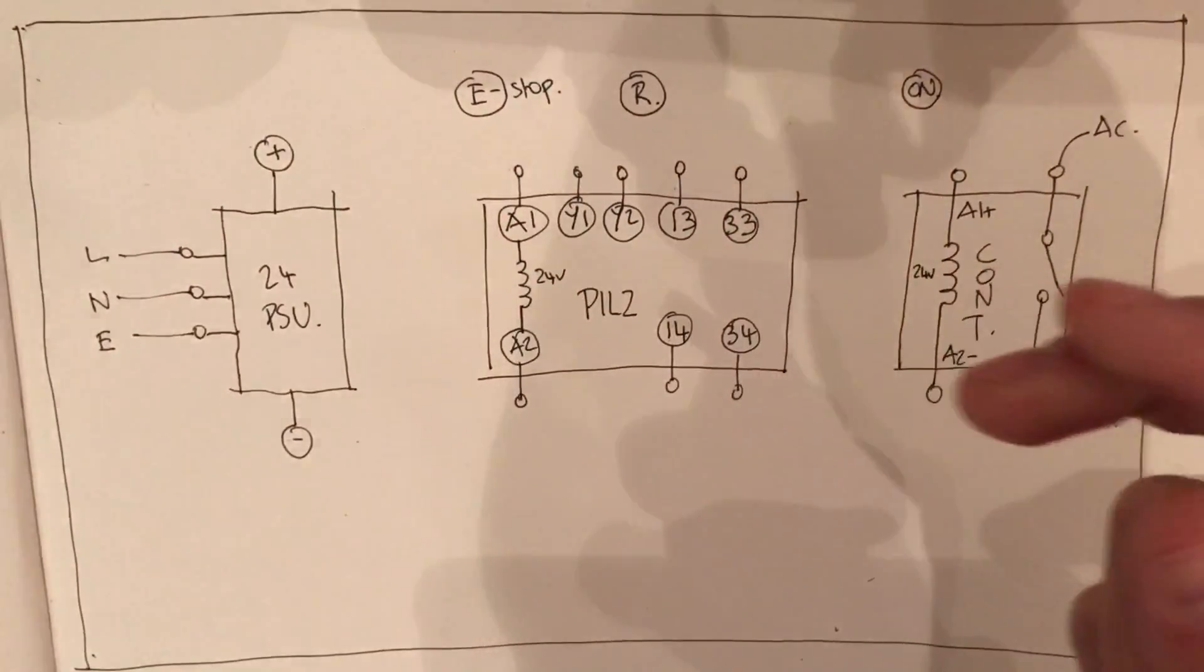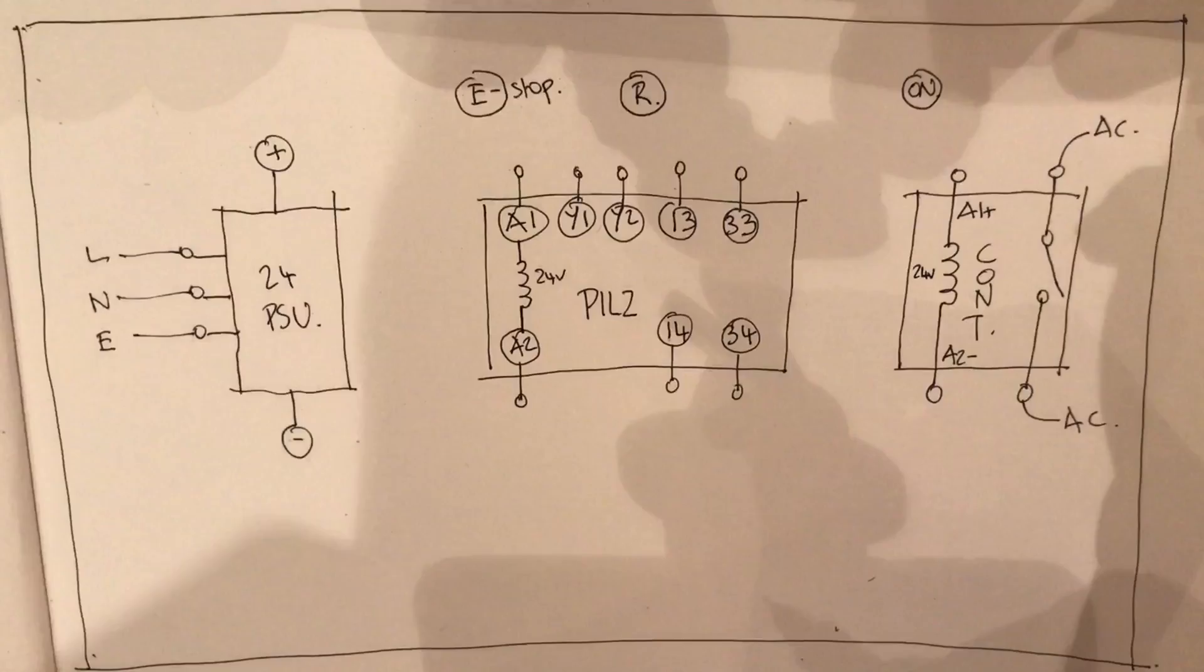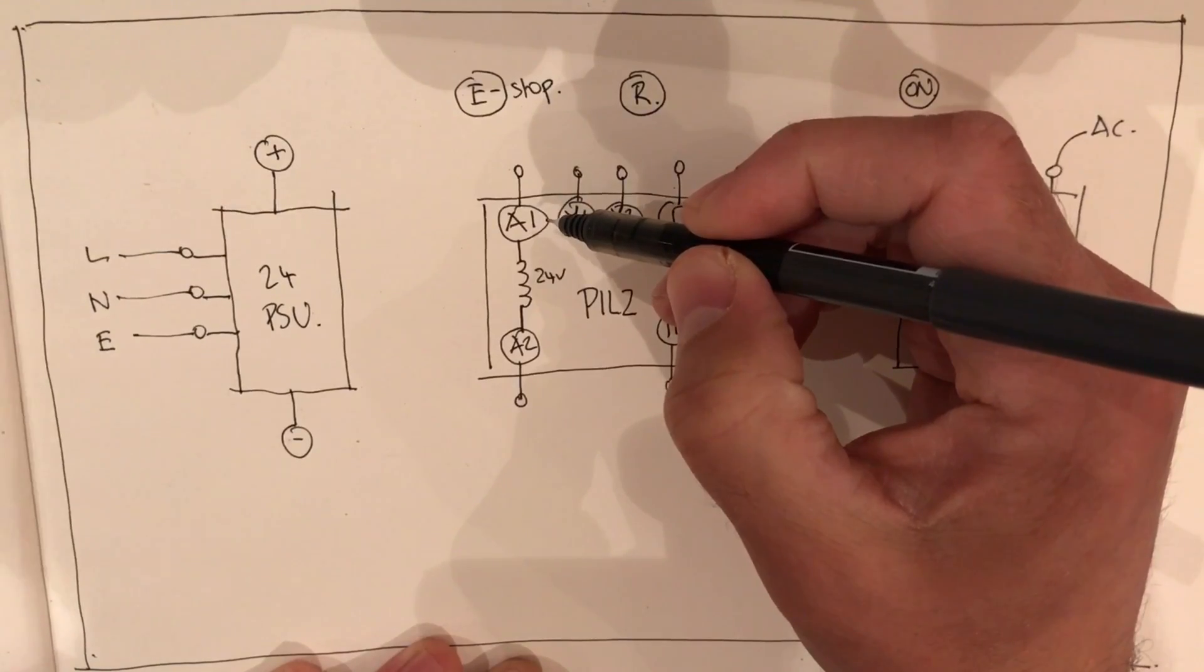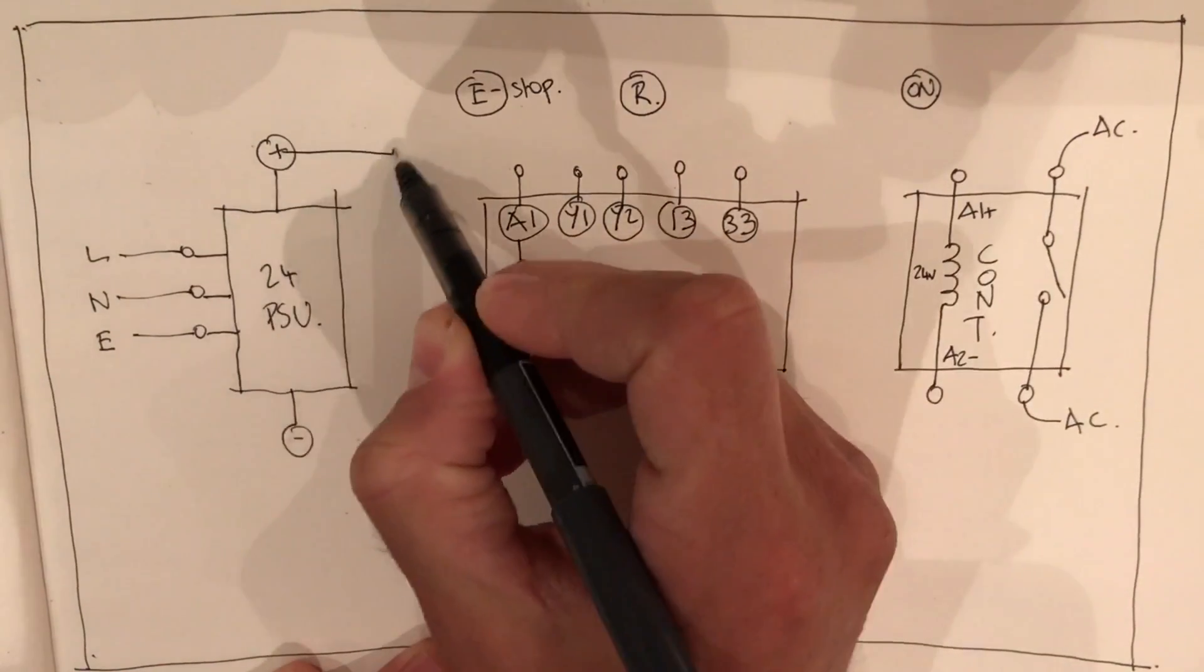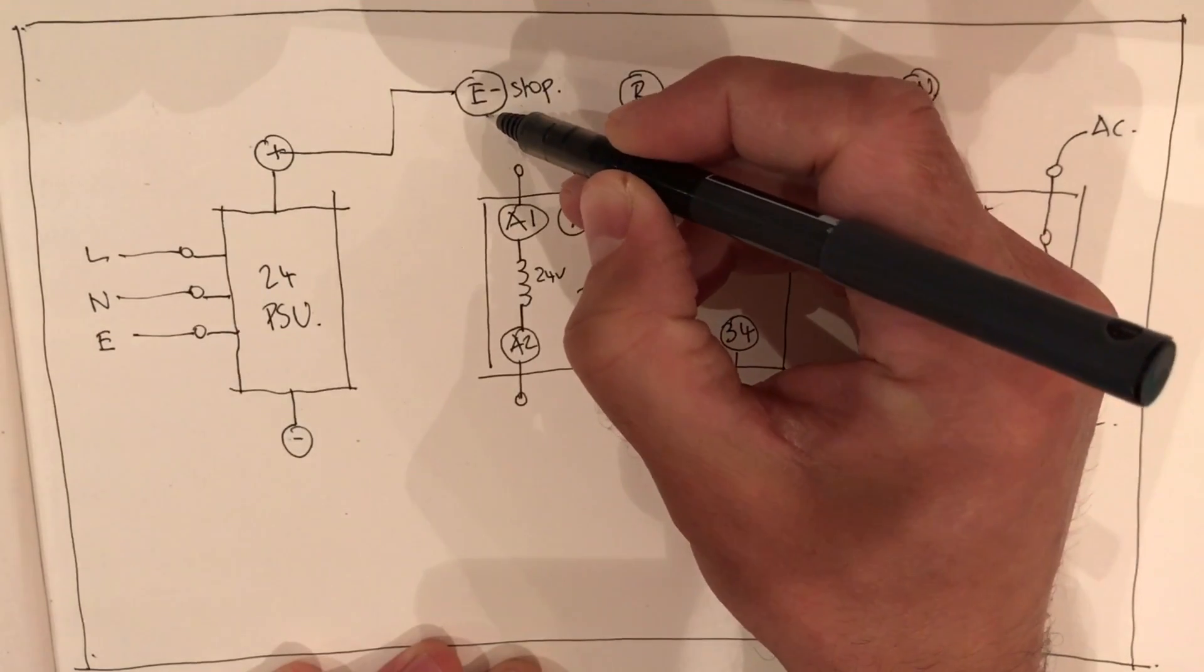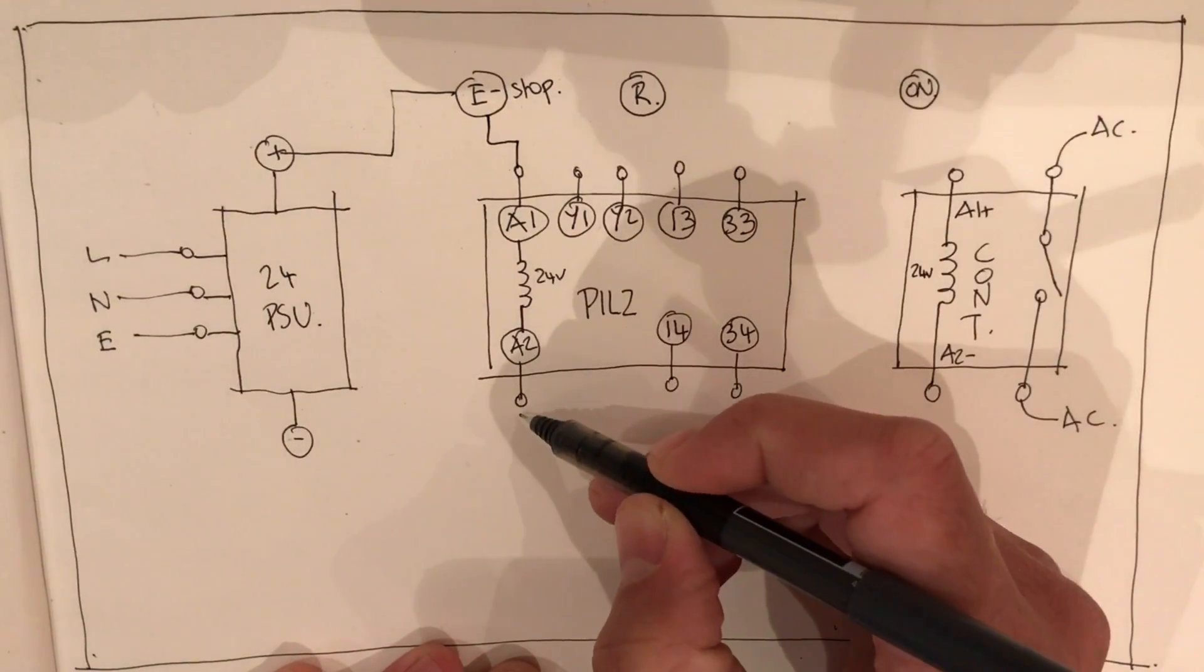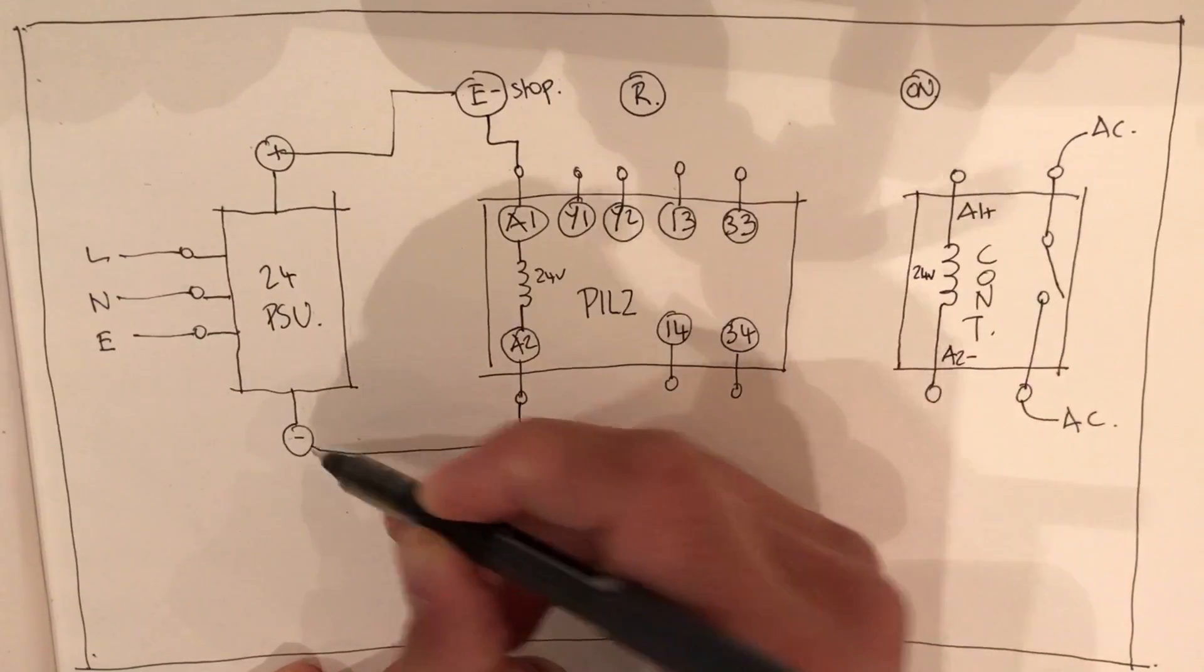The stop is just in series with the main coil on the Pilz. We have positive, then into there and out of here, over into negative.